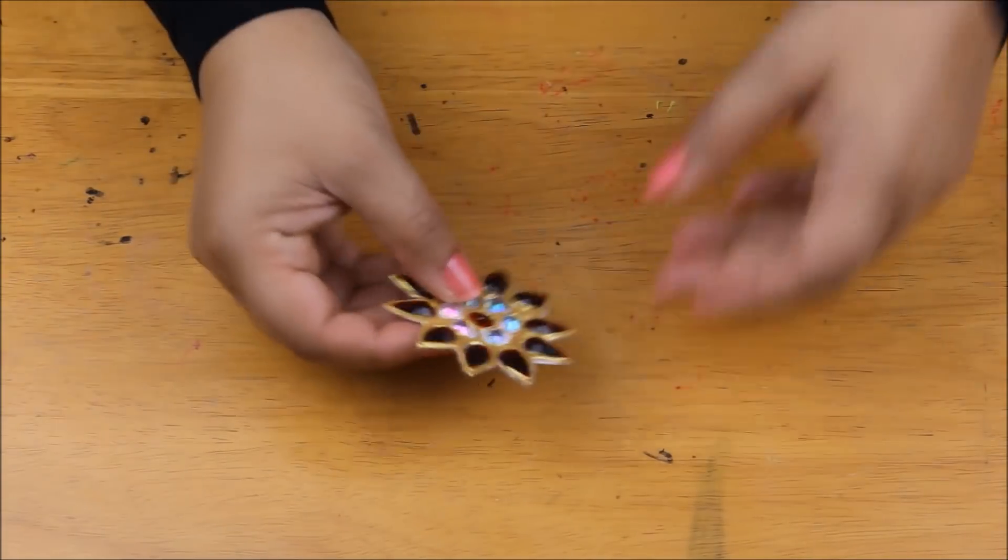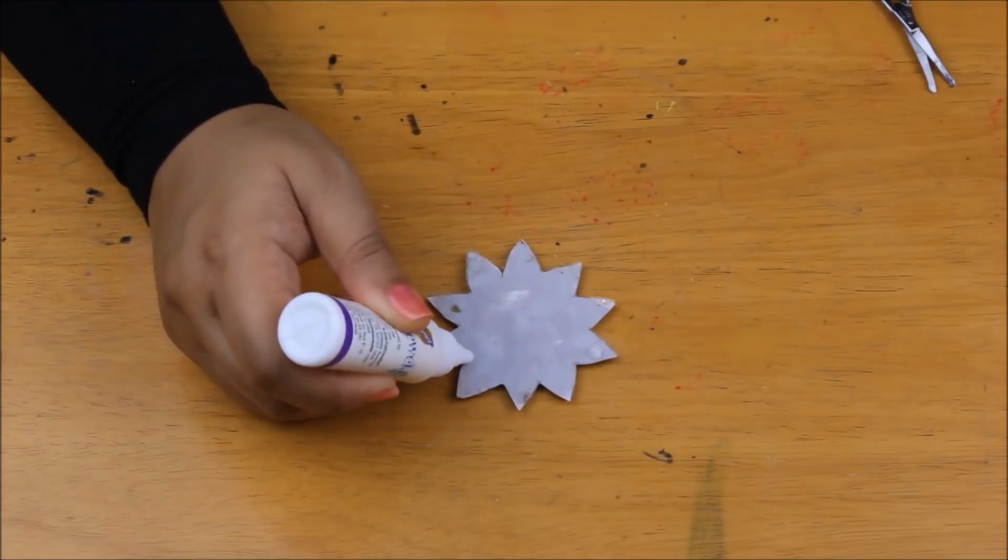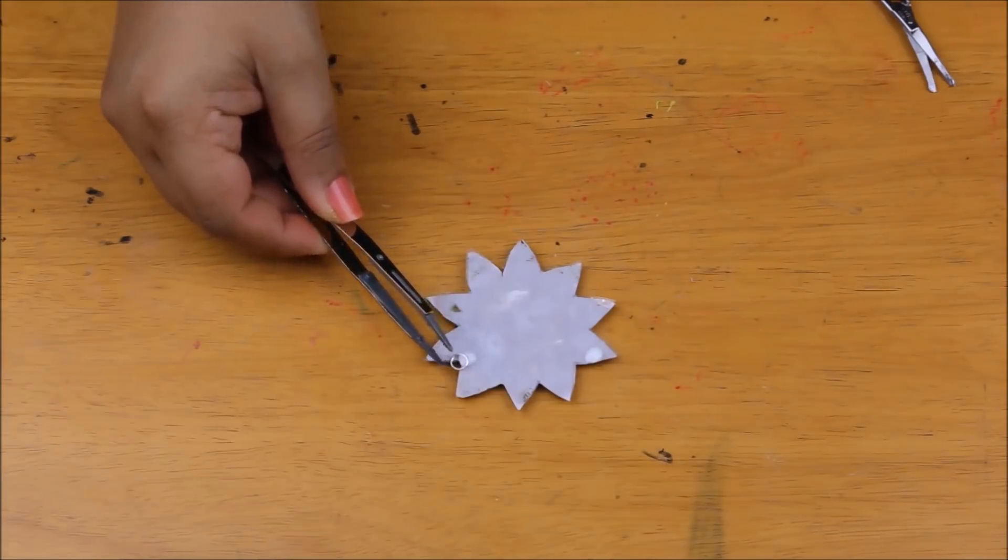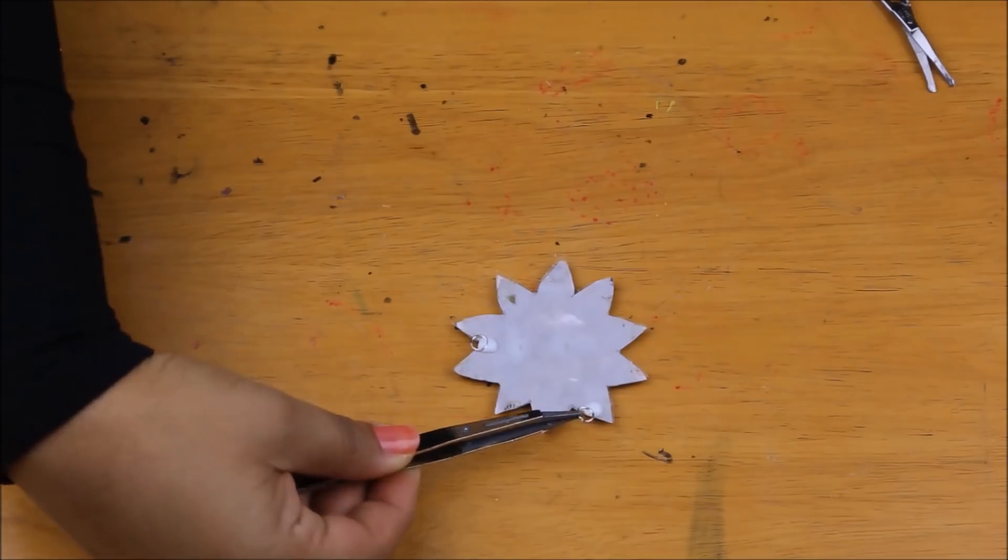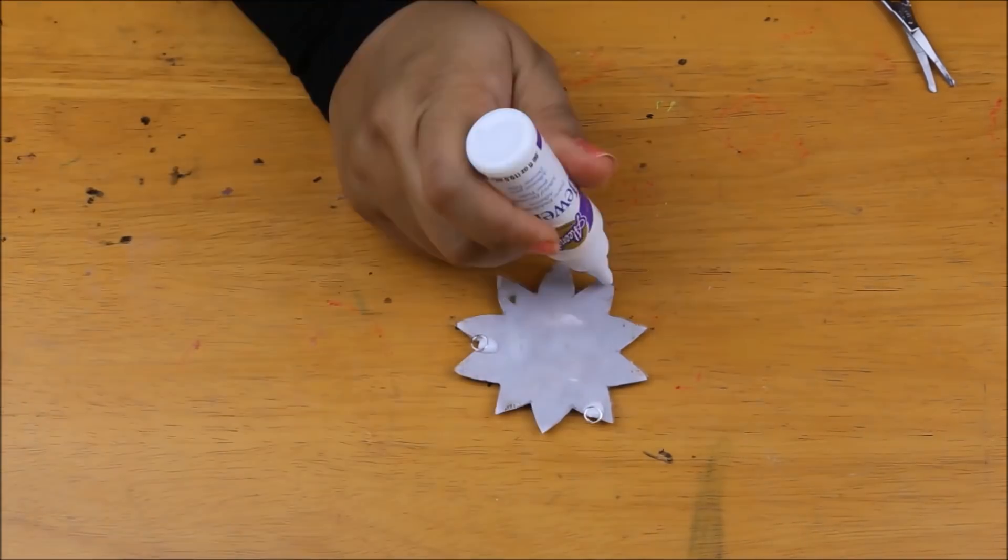At the back of this pendant, I'm going to attach three jump rings. Two of them will be used to attach another dangler to this and one of them to attach this pendant directly onto the body of the choker.